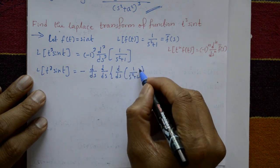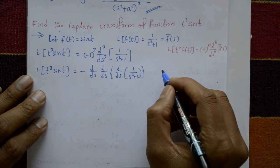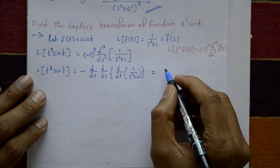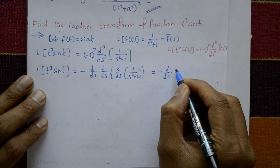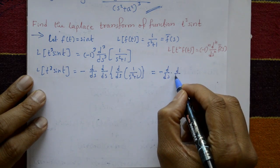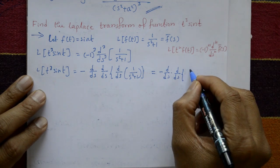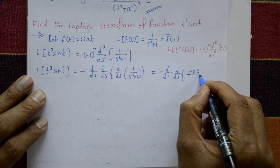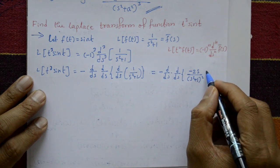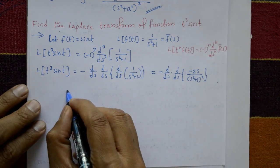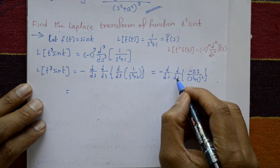Now differentiate 1/(s²+1) with respect to s using the quotient rule. The first derivative gives -2s/(s²+1)², so we have minus · (d/ds) · (d/ds) applied to -2s/(s²+1)².